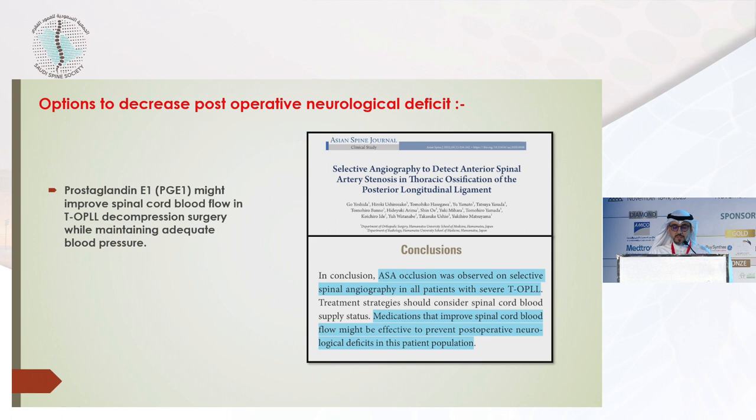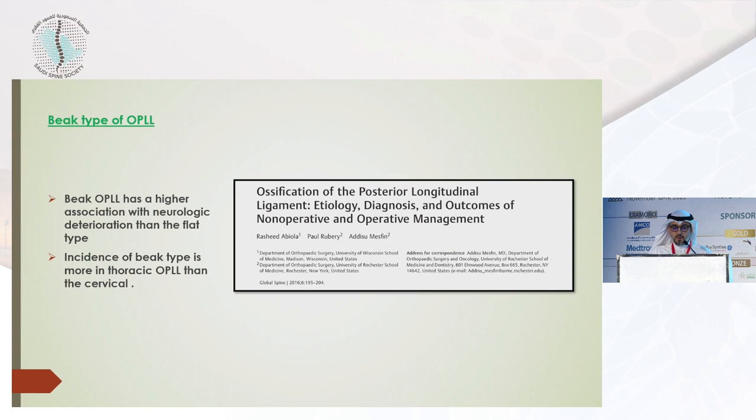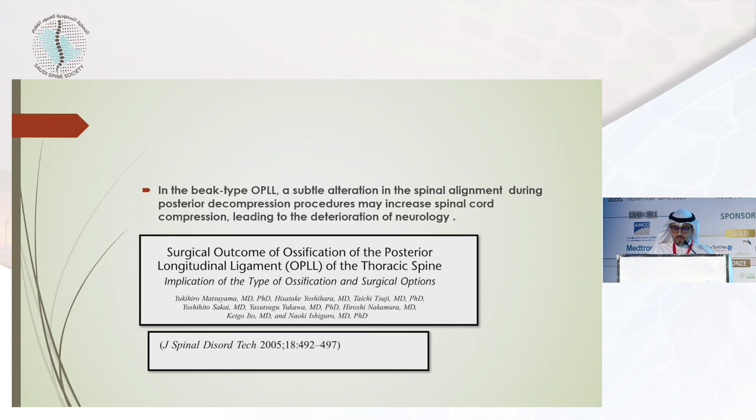Regarding the beak type of OPLL: one study showed that the beak type has a higher association with neurological deterioration than the flat type. The incidence of beak type is more common in thoracic than in cervical OPLL. In beak type OPLL, subtle alteration in spinal alignment during posterior decompression procedures may increase spinal cord compression, leading to neurological deterioration.